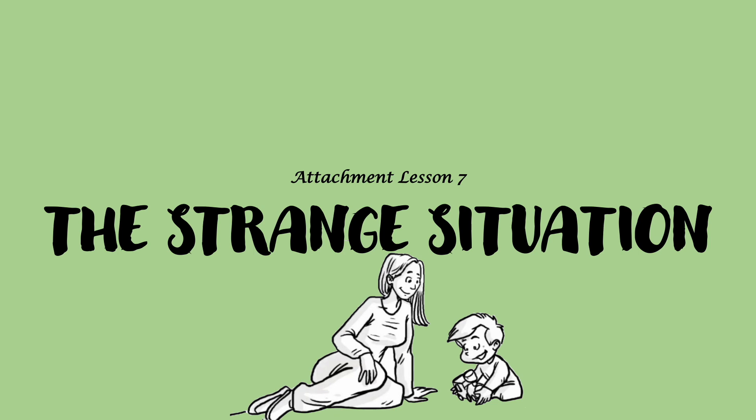Welcome to attachment lesson seven. In this video we're going to be looking at types of attachment and the strange situation. As always we'll spend a bit of time on the outline first before going on to the evaluation points, and then we'll end with a six mark example outline. The timestamps in the description will let you navigate to a particular section of the video if you're looking for something specific.